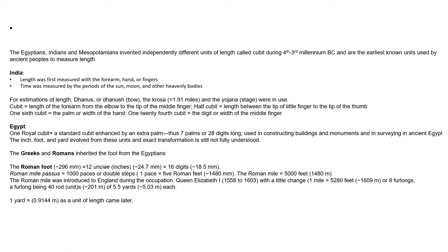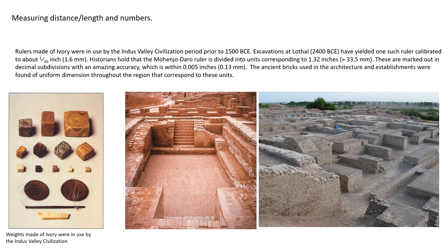Romans made some alterations: a Roman foot was 12 inches and equal to 295 millimeters. The Roman mile (mille passus) was 1000 paces or double steps, and a Roman mile was 5000 feet or 1480 meters. This unit of measurement reached England much later — between 1558 and 1603, during the reign of Queen Elizabeth I. A British mile was 5280 feet or 1609 meters, or eight furlongs. They later introduced the yard, equal to 0.9144 meters.